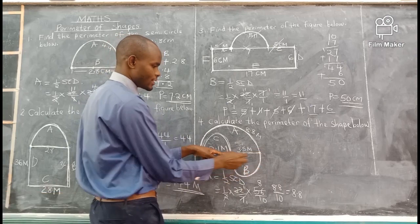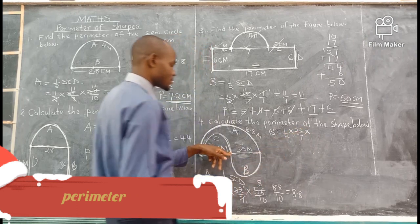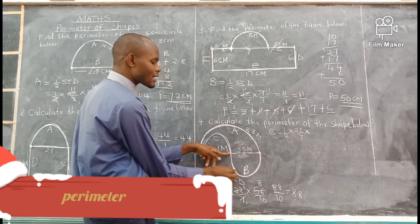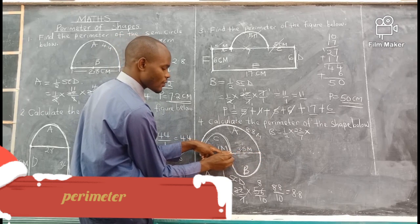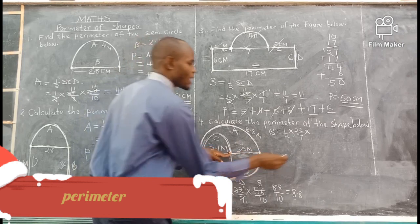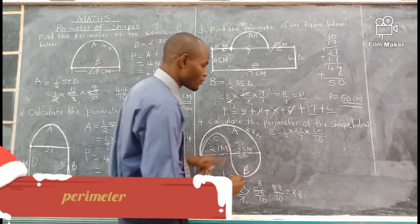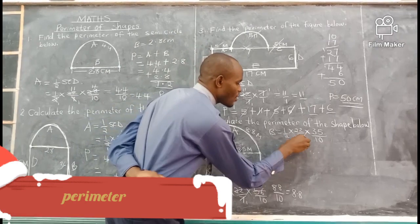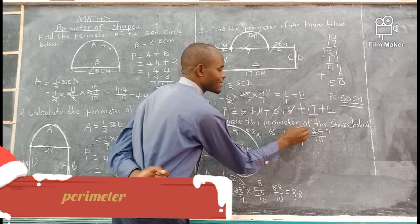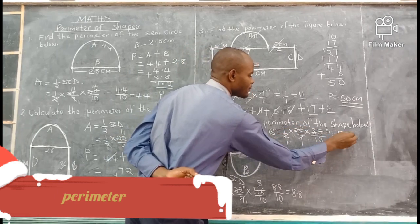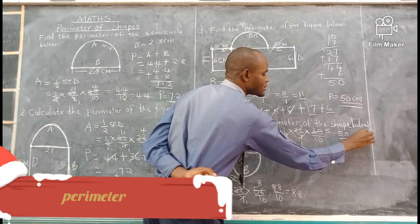Now B. B equals half times 22 over 7 times the diameter of semicircle B. The diameter is 3.5 — the distance joining the two ends of that semicircle. Convert to fraction: 35 over 10. Simplify: 35 divided by 7 gives 5; 22 divided by 2 gives 11. So 11 times 5 gives 55, over 10. That becomes 5.5. Remember to give answers in decimals.